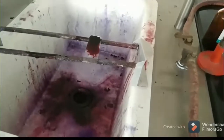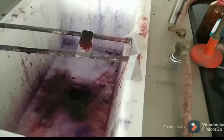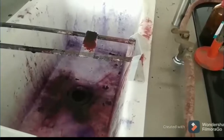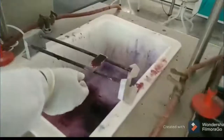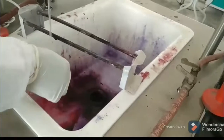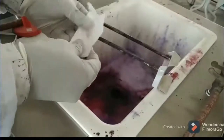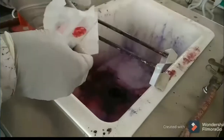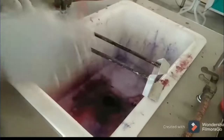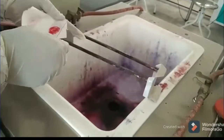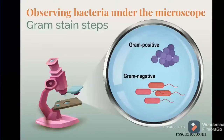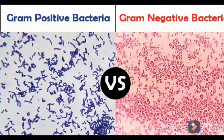The fourth step is safranin, the counter stain. Pour it so it covers the smear and wait for one minute. Safranin is pink in color. Gram negative bacteria — those other than gram positive — will take up the safranin and retain the pink color. So gram positive will appear violet, and gram negative will appear pink.